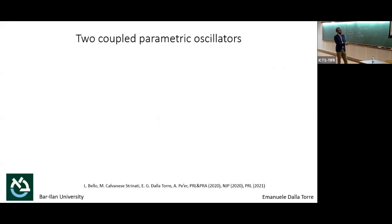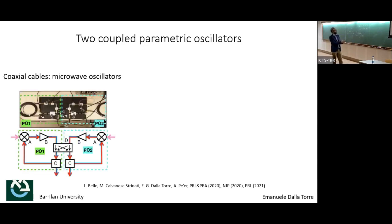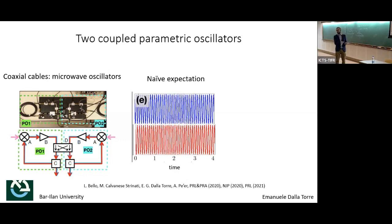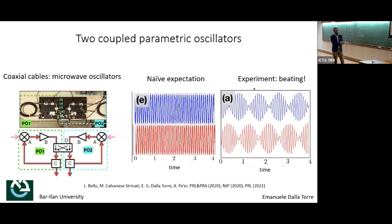My collaborators at Bar-Ilan, experimentalists, said: 'Let's take two coupled parametric oscillators, make a two-bit system.' This is actually not a quantum oscillator, just a classical oscillator — a very long waveguide with some base frequency. They coupled them and expected to observe four answers: two for one oscillator, two for the other, shifted by half a period. But instead what they observed was beating, and so they came and said 'you are a theorist, explain this to me.'